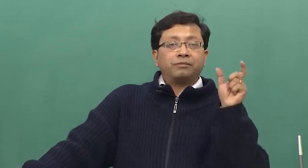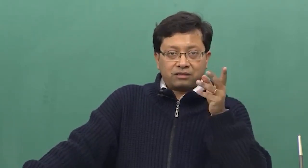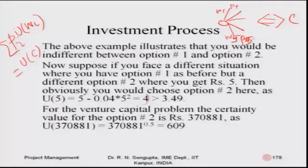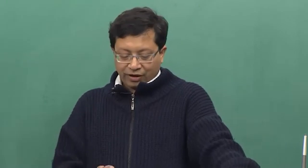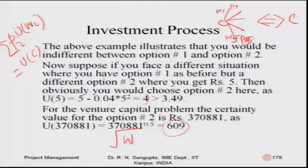For the venture capital problem, if you remember, there were outcomes of ten lakhs, five lakhs, and others with probabilities of forty, forty, and twenty percent. The certainty equivalent for option two comes out to be approximately three lakhs seventy thousand eight hundred eighty-one rupees, since the overall expected utility was 609. So any amount greater than three lakhs seventy thousand eight hundred eighty-one means you would be better off taking that non-probabilistic outcome.